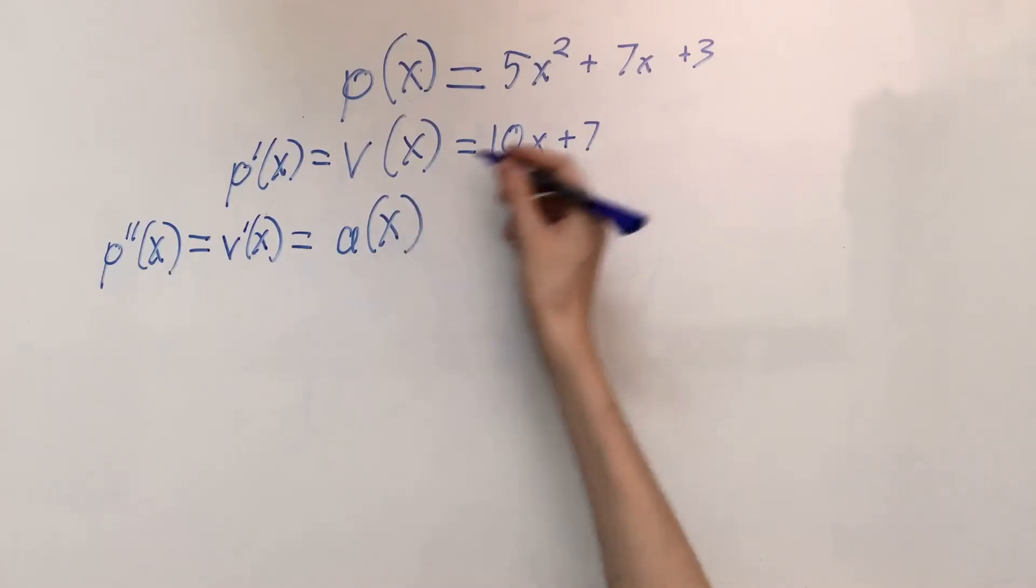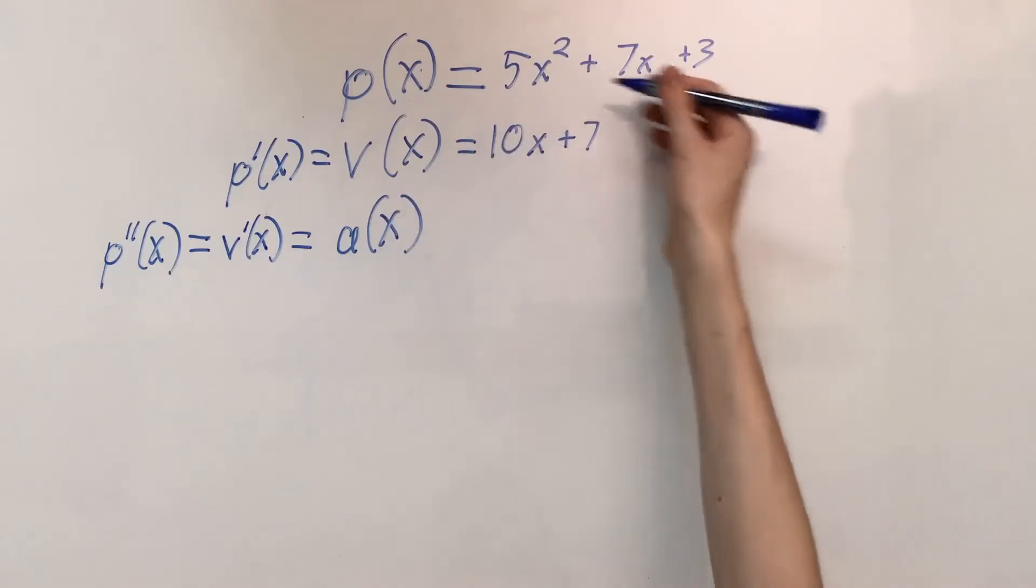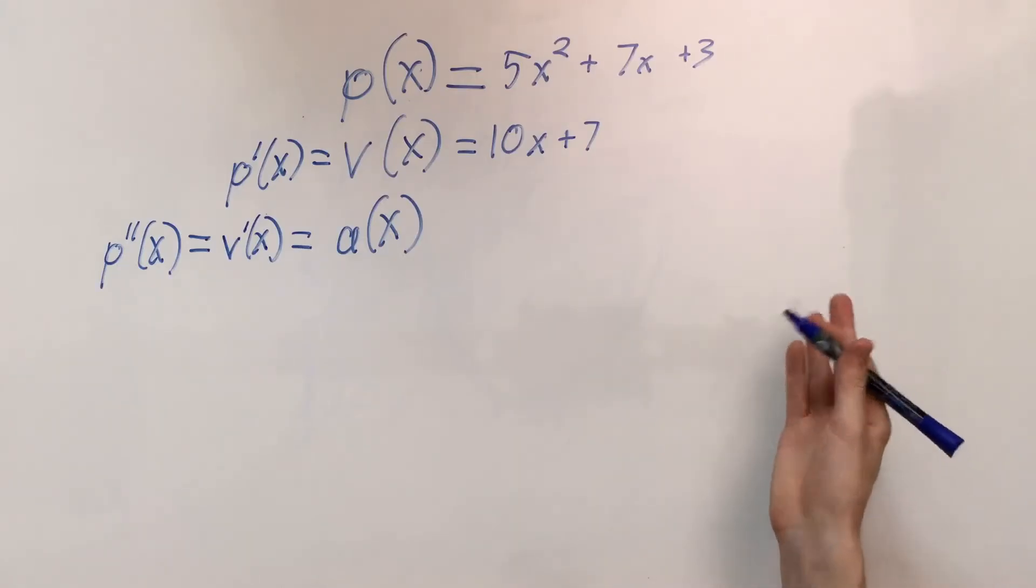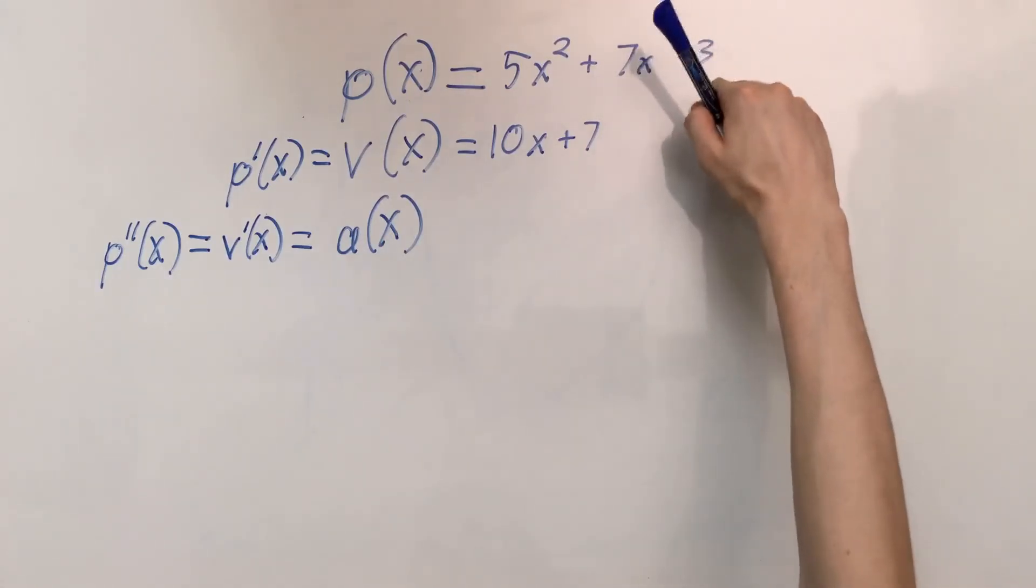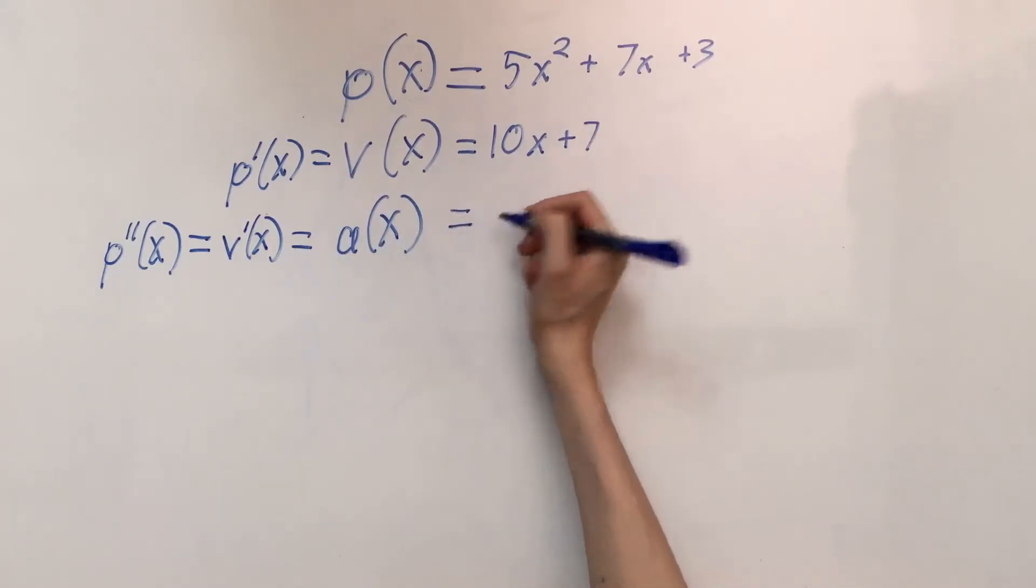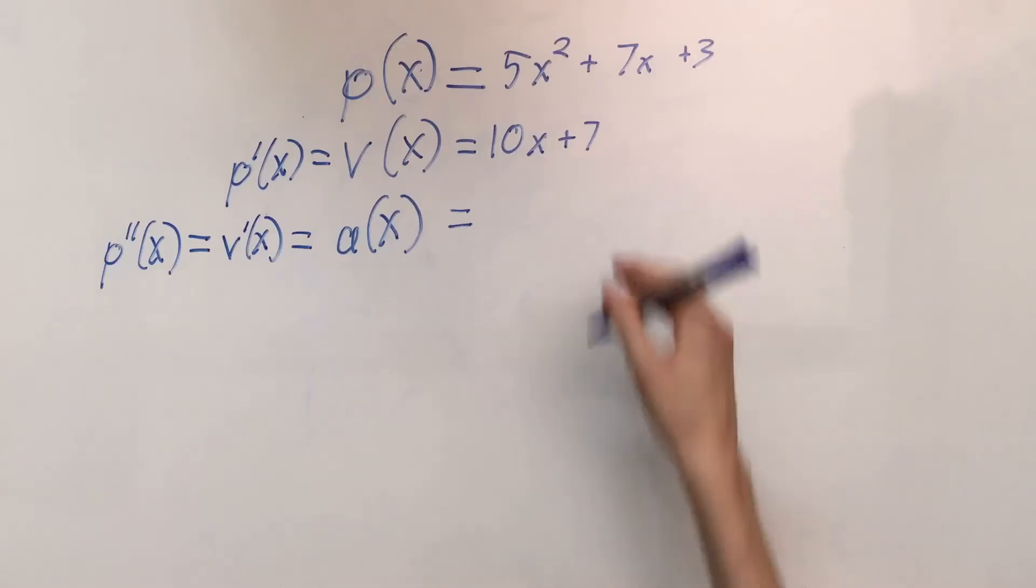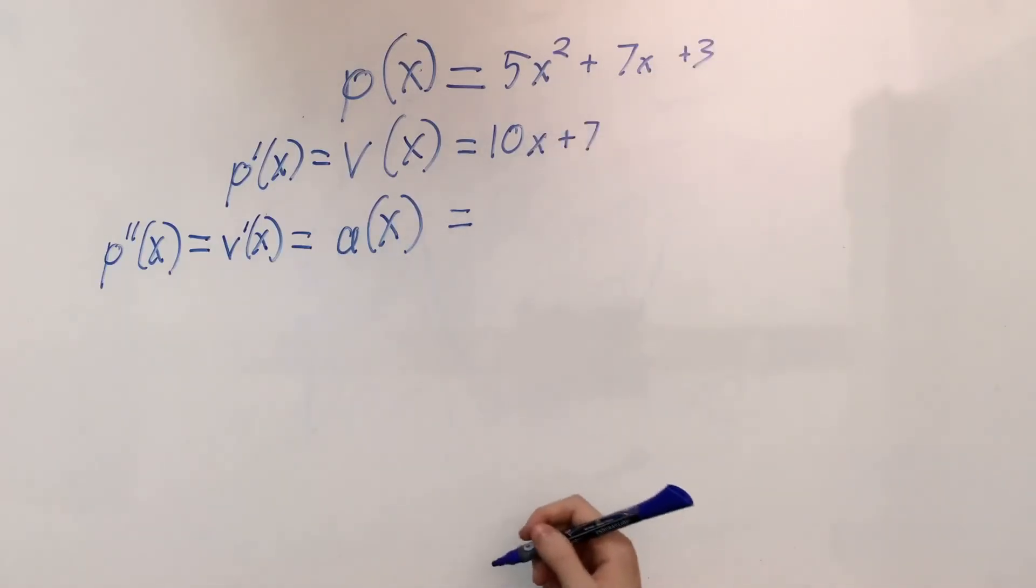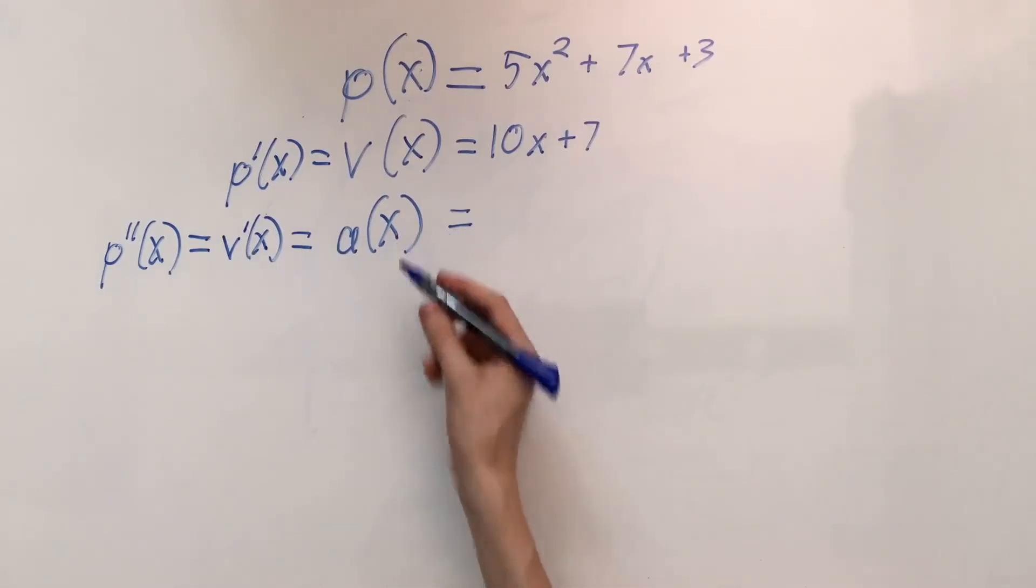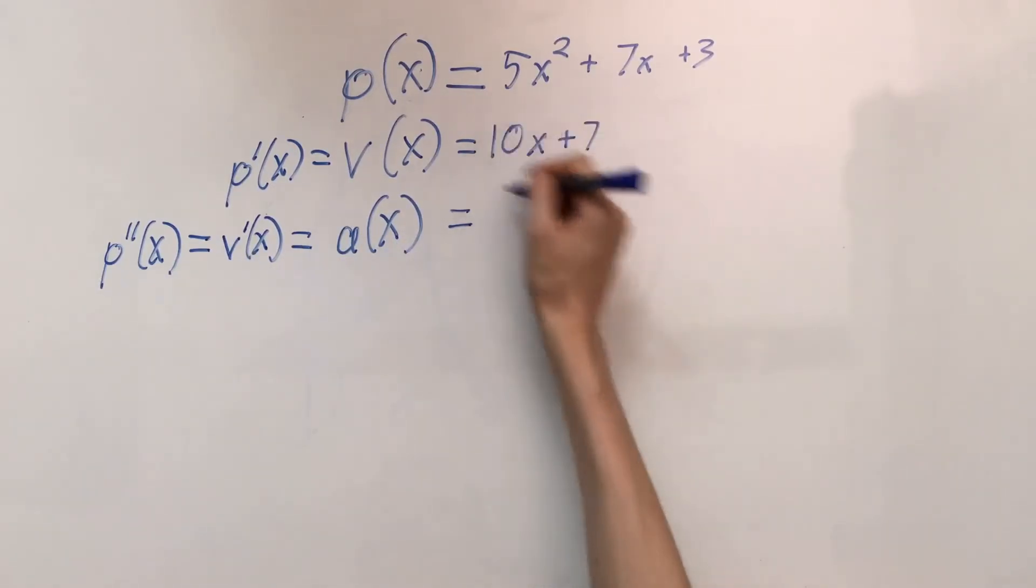Now, while we could try to apply that funky formula that we discussed earlier to this function to determine what the acceleration would be equal to, it kind of really isn't worth it because we already have a derivative already figured out, which is just the 10x plus 7. So what we just simply do is, because the derivative of the velocity is equal to the acceleration which we're trying to find here, we can just simply take the derivative of this.